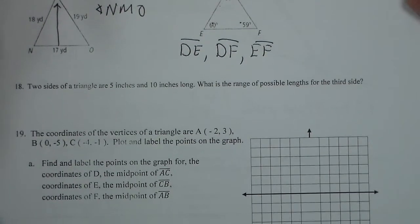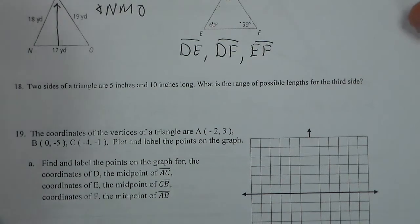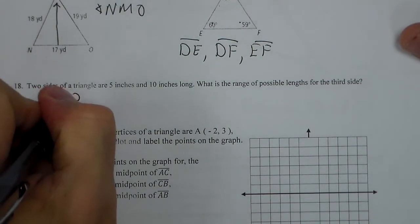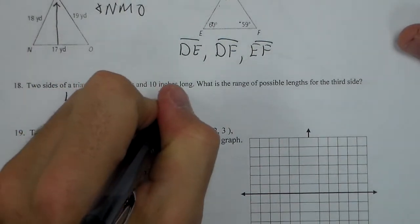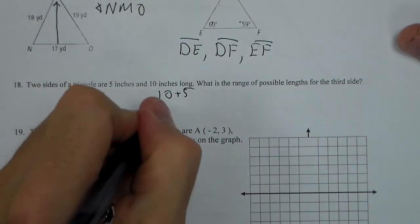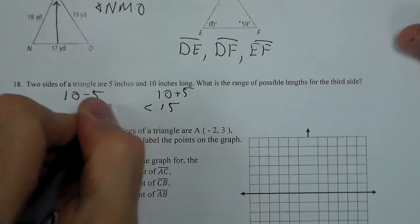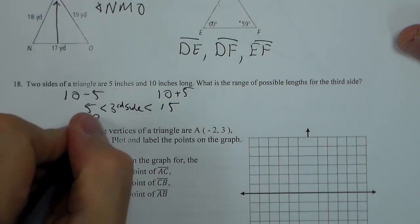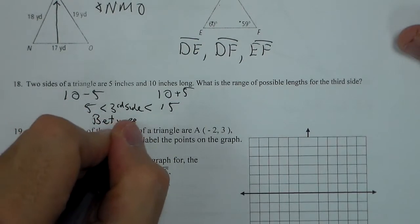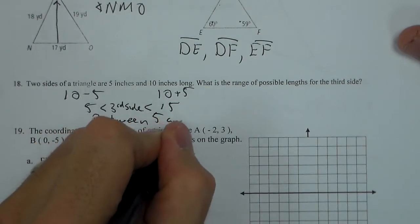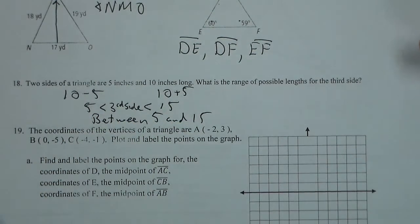For number 18, two sides of a triangle are 5 and 10. What is the range of possible lengths for the third side? We're going to go 10 minus 5 and 10 plus 5. So we get 5 and 15, with our third side being between those. So we'll write between 5 and 15. Again, not including 5 and 15 though, as we solve that.